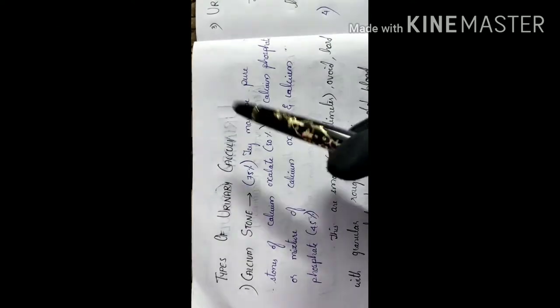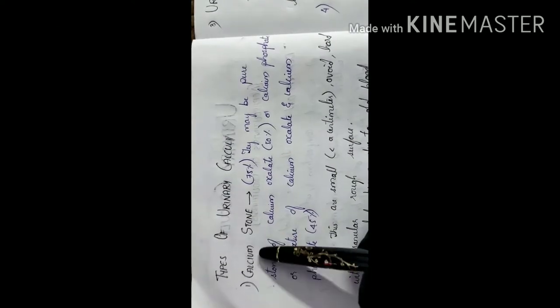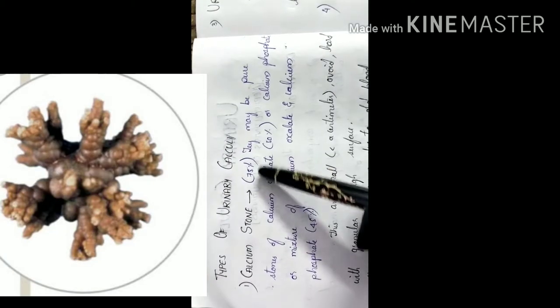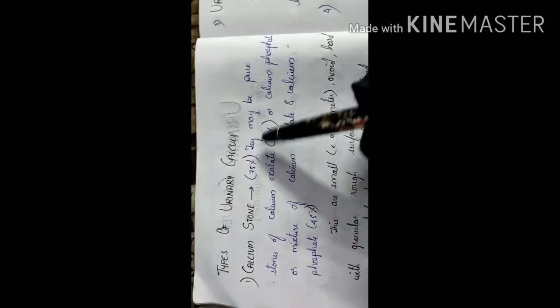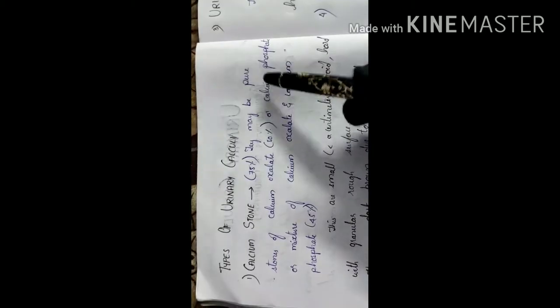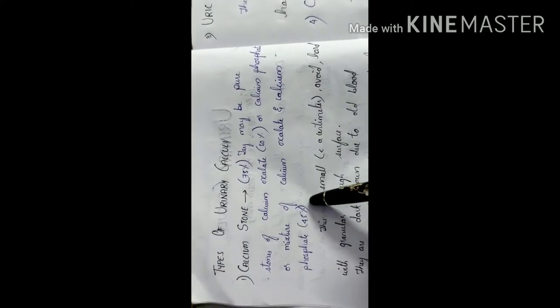Coming to the types of urinary calculi — the first is calcium stone, which is very common, accounting for around 75% of cases. It can be purely calcium oxalate stone (50% of cases), purely calcium phosphate stone (5% of cases), or a mixture of both calcium oxalate and calcium phosphate, which accounts for around 45% of cases.